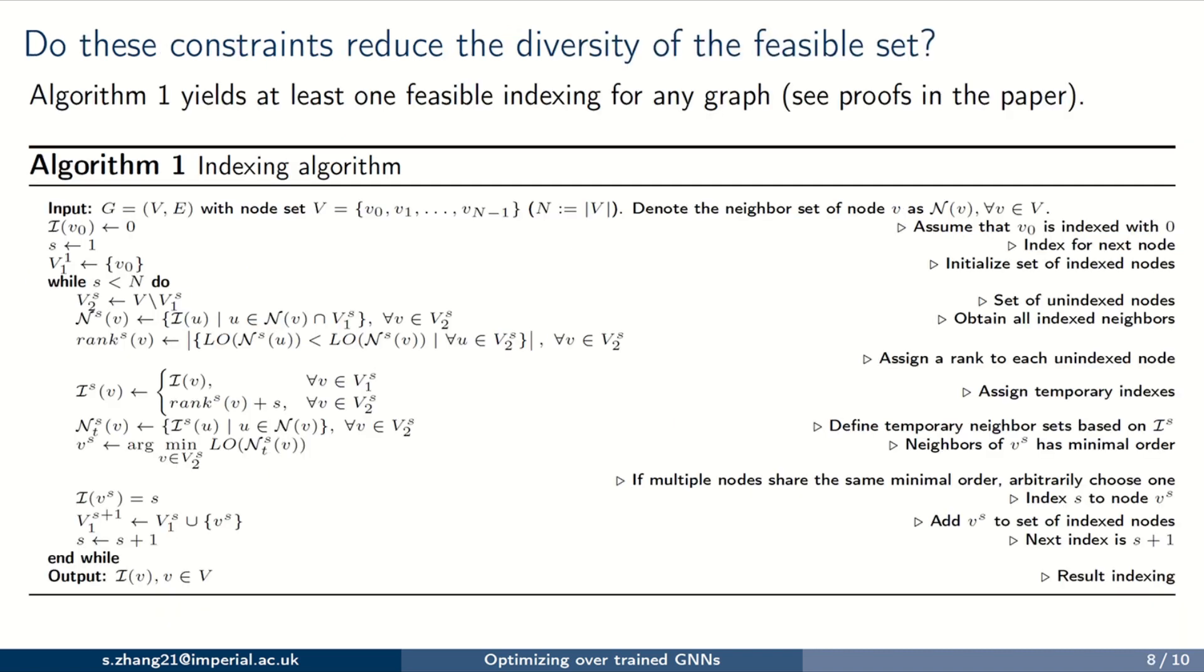Before adding these constraints to our optimization problem, we need to ask, do these constraints reduce the diversity of the feasible set? If that's true, then adding these constraints actually reduces the real search space, which is unacceptable. Thankfully, algorithm 1 can provide at least one feasible indexing for any graph. Please read our paper for details.